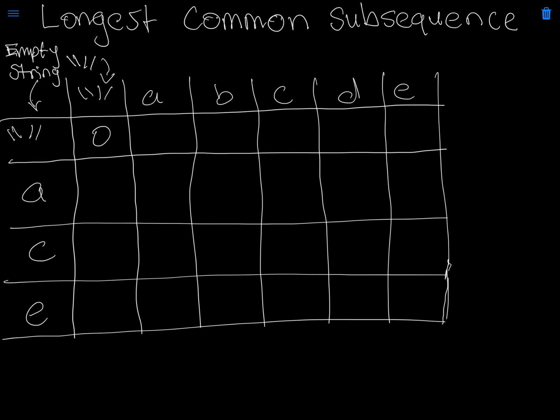For the longest common subsequence problem, we first insert zeros for those empty strings. If we compare the empty string with A we put a zero, empty string with B would be zero, and we keep doing this until the end of the string. For the second string A-C-E it's the same way, because comparing an empty string with A, C, or E gives us zero.